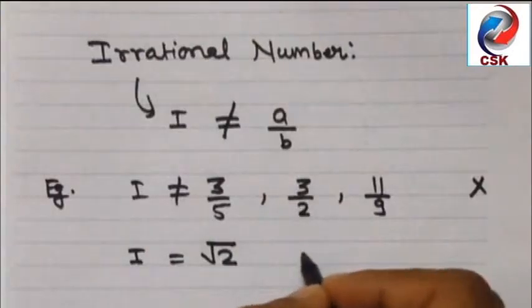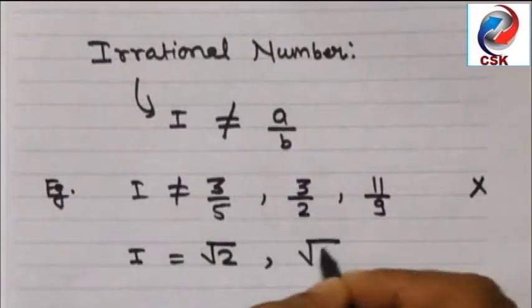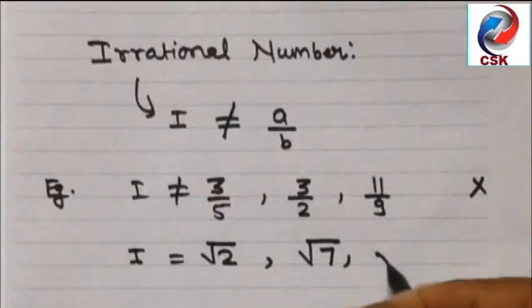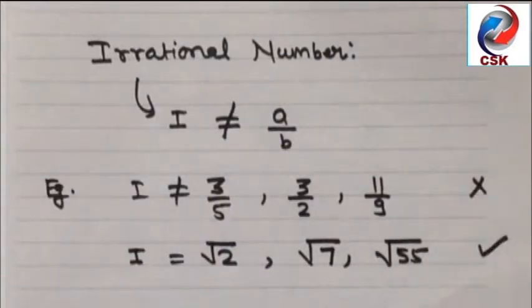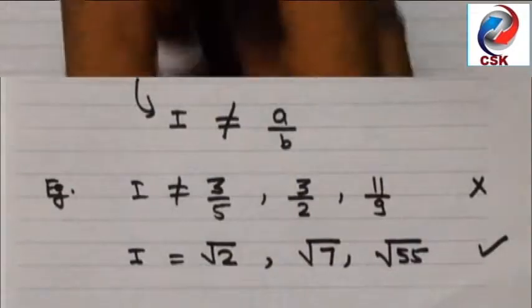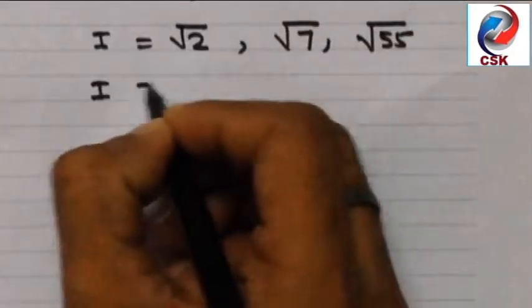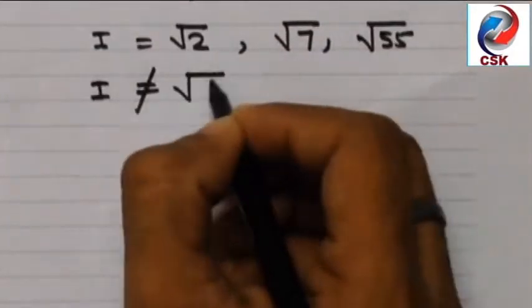Now let me consider another number. Let's say i is equal to root 2. This is an irrational number. Root 7, root 55. All these numbers are irrational numbers because this cannot be written in the form of a by b where a and b both are integers.